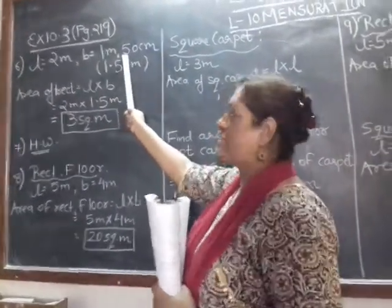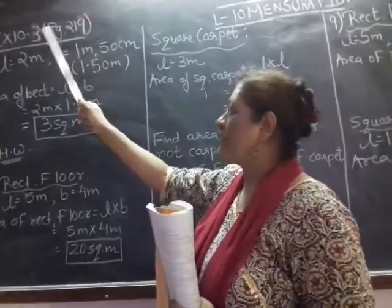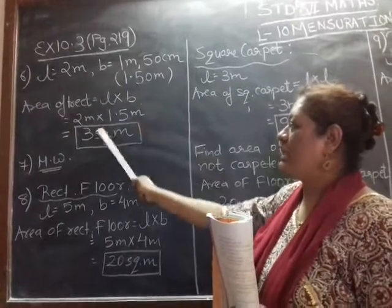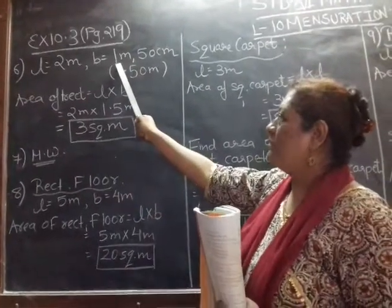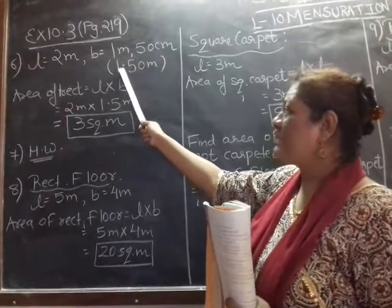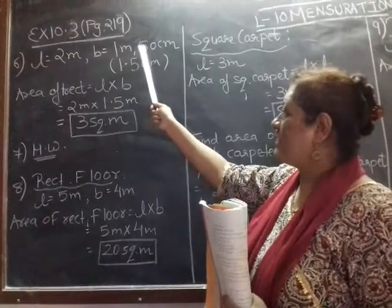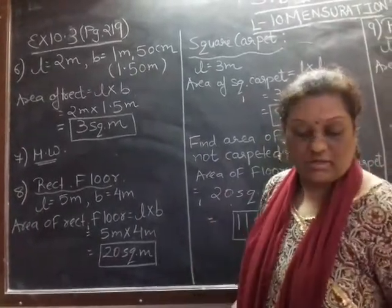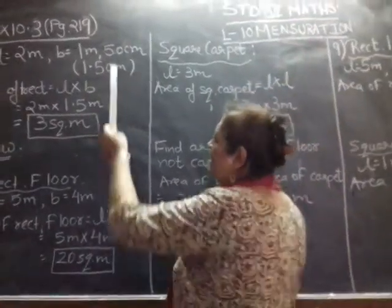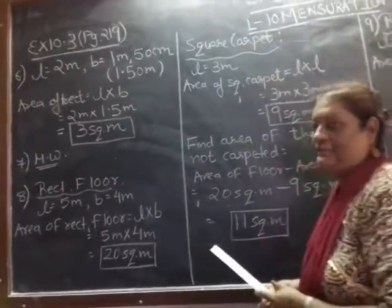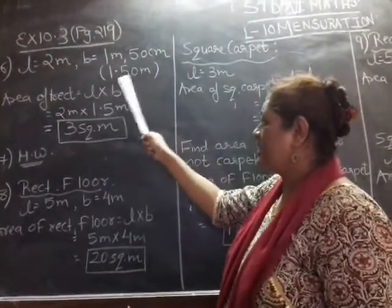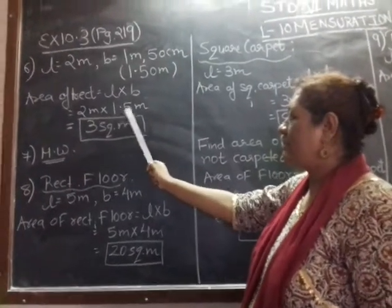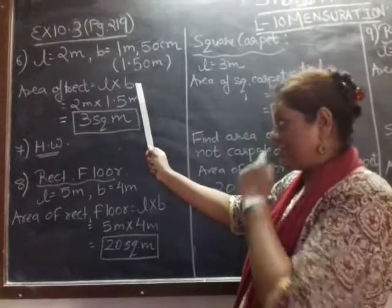Centimeters generally have 2 digits, so here we need not convert — we can write directly with the decimal point. We have to find the answer in square meters, so 1.50 meters. Since centimeters have 2 digits and we require 2 digits, directly 1.50 meters. Area of rectangle is length into breadth, so 2 meters into 1.5 meters.